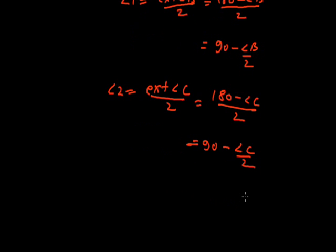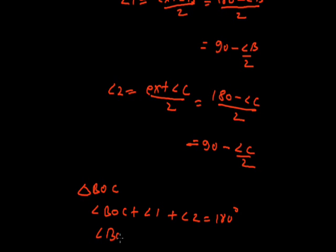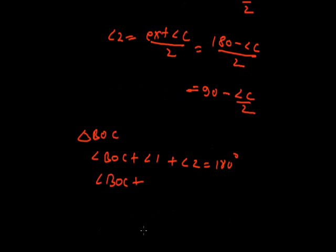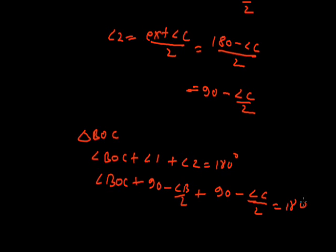In triangle BOC, we apply the angle sum property: angle BOC plus angle 1 plus angle 2 equals 180 degrees. Substituting: angle BOC plus (90 minus B by 2) plus (90 minus C by 2) equals 180. Since 90 plus 90 equals 180, these cancel, leaving angle BOC equal to minus(−B/2) minus(−C/2), which when shifted to the right-hand side becomes B by 2 plus C by 2.